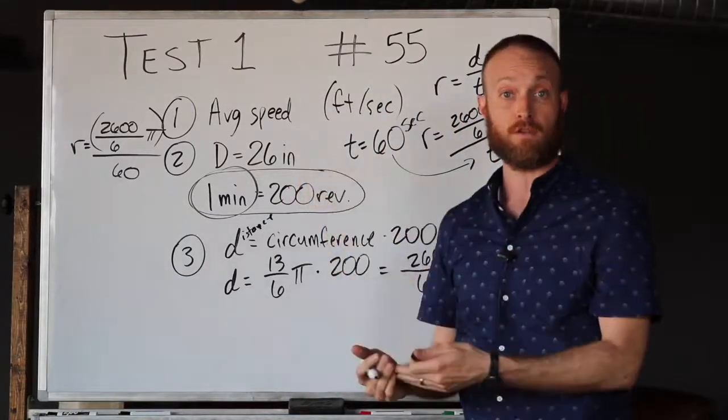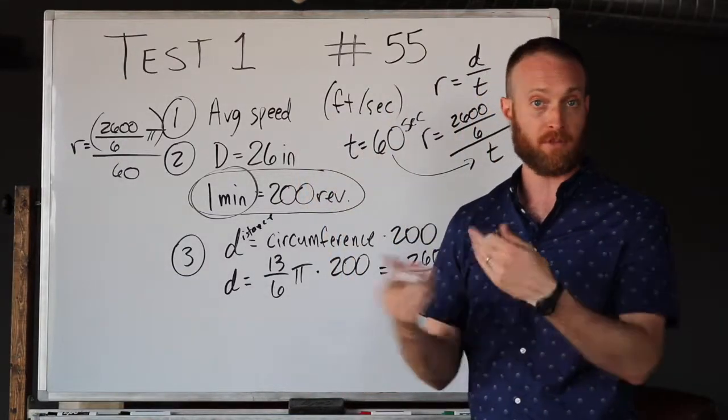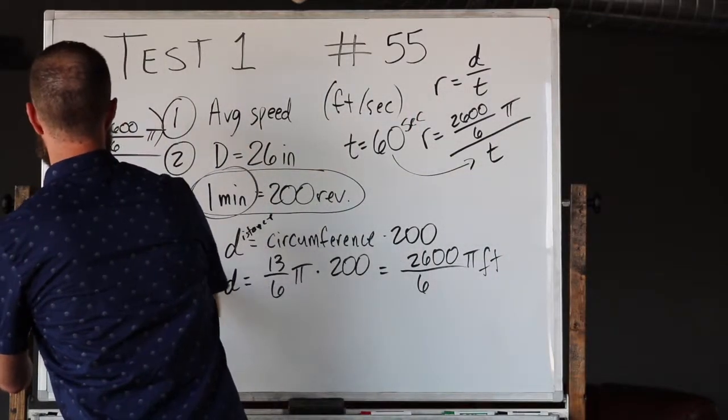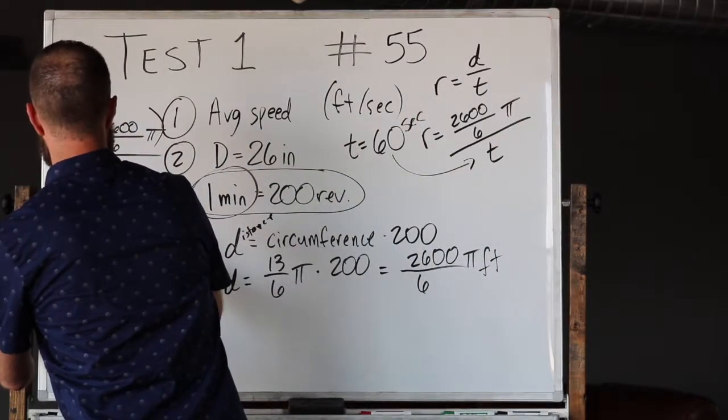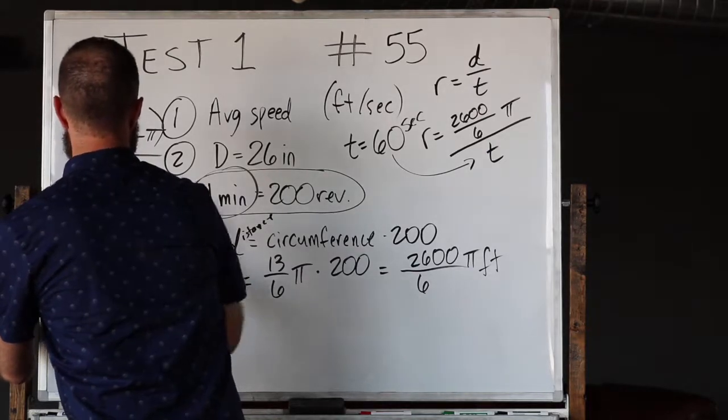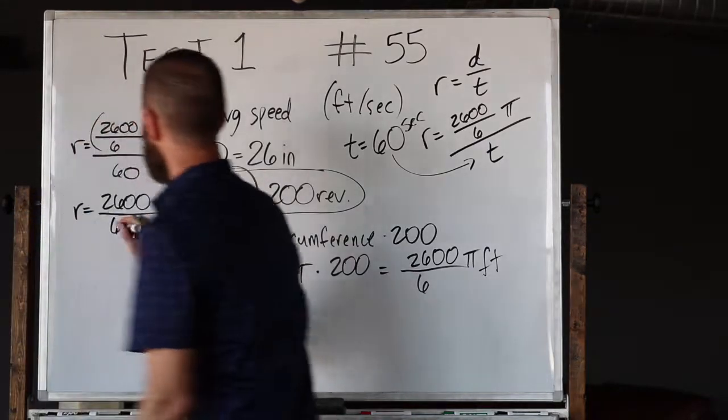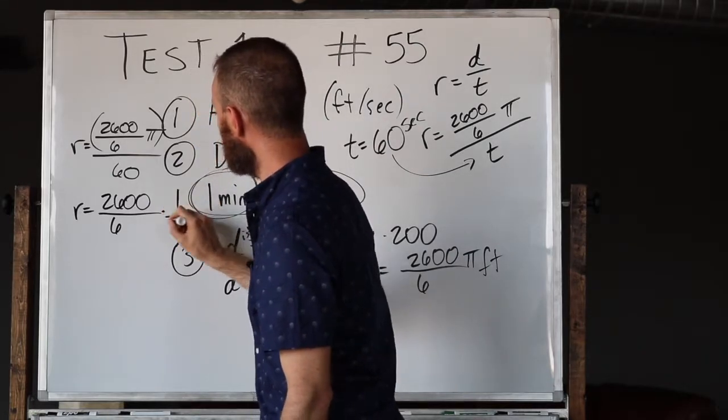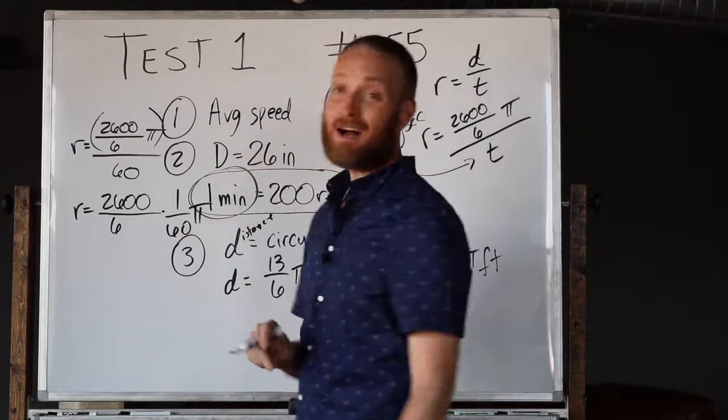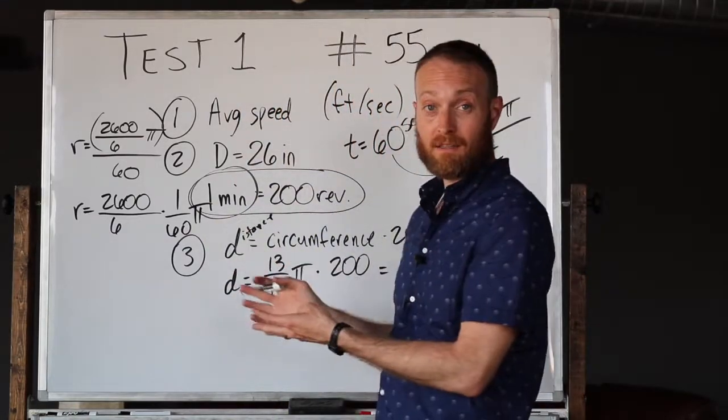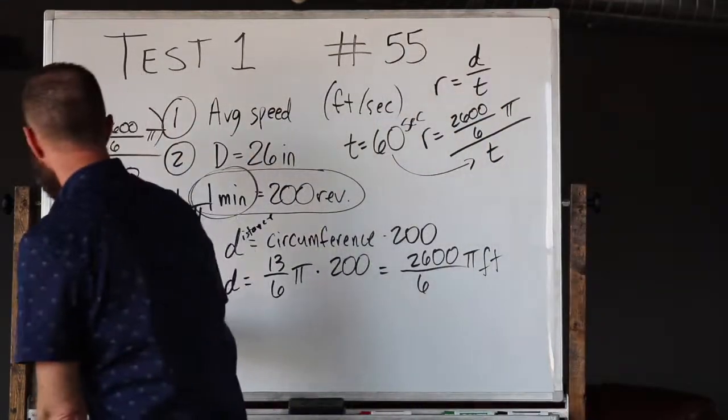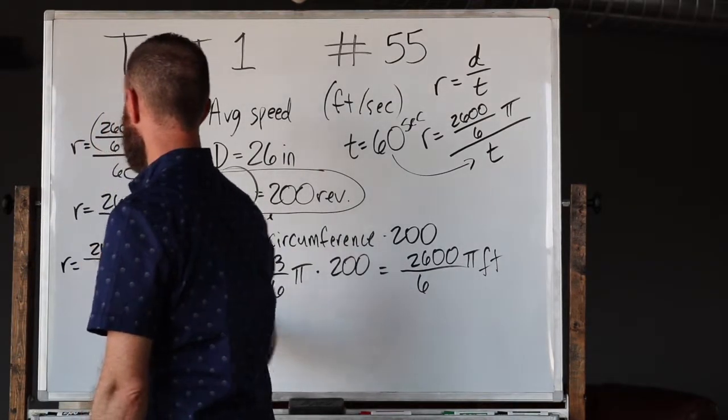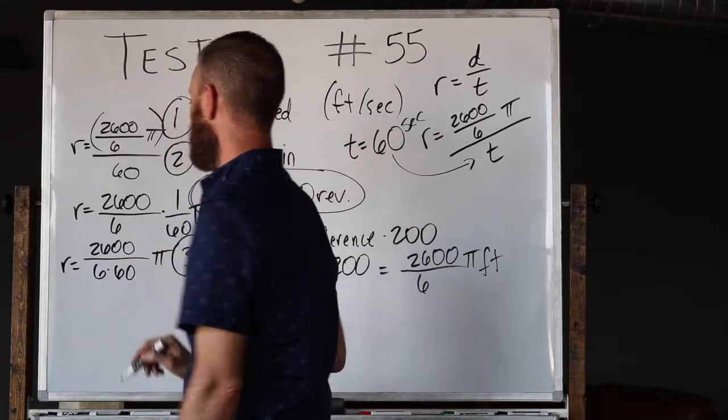If you're going to divide by 60, another way of looking at that is multiplying by 1/60. So rate equals 2600/6 times 1/60 times π. We simplify this further: r equals 2600/(6 × 60)π, which is 2600/360π.